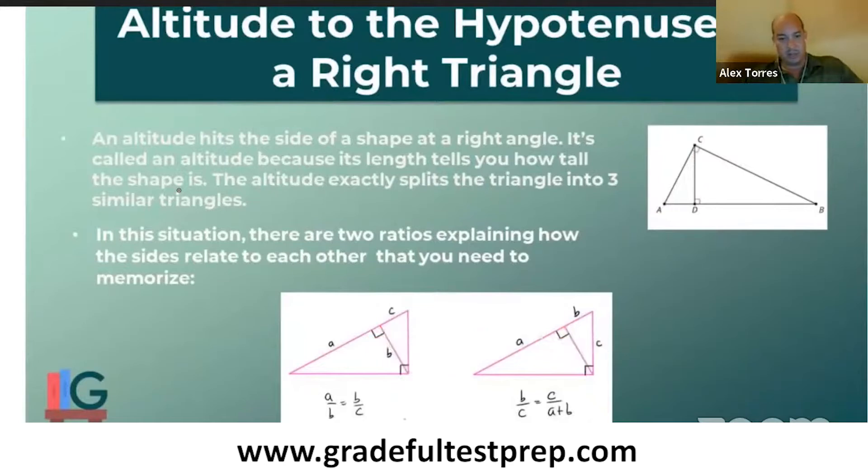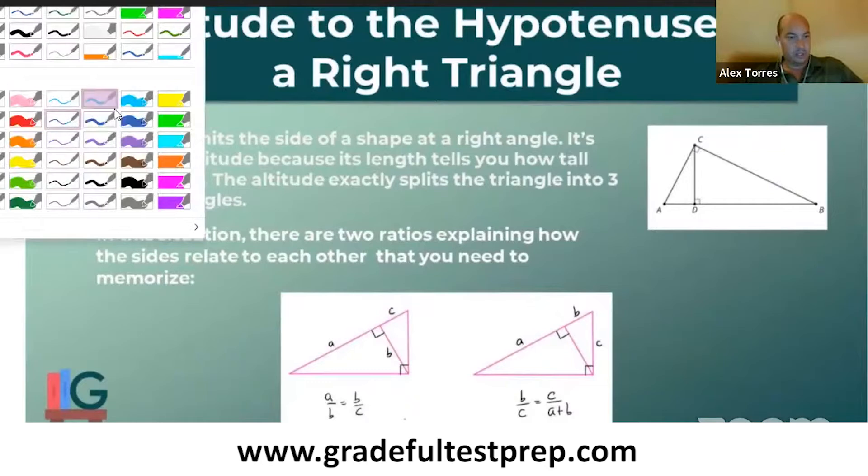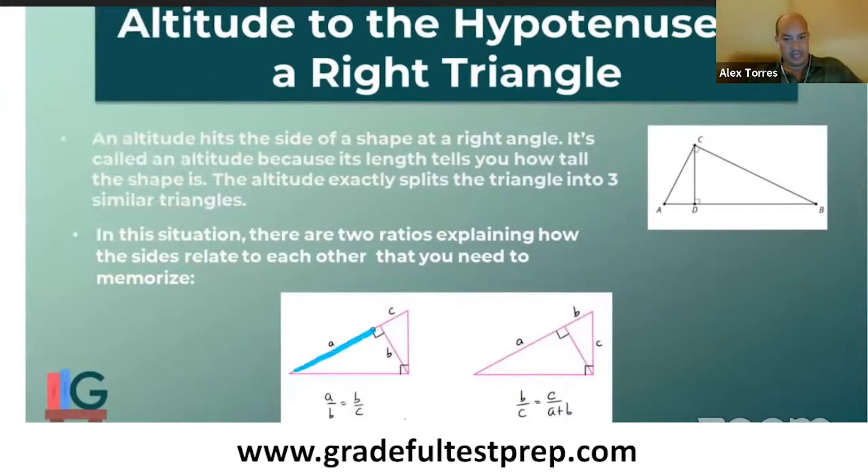But what you need to know for the SAT is that there's a certain ratio that you need to use in this situation. It's A over B equals B over C. So I like to think of a caterpillar in this situation, but it's just a certain ratio.